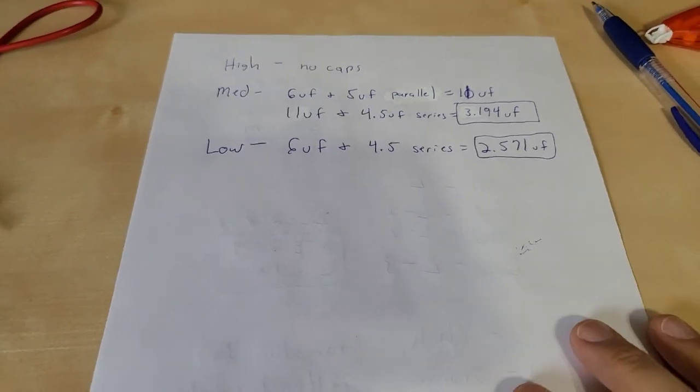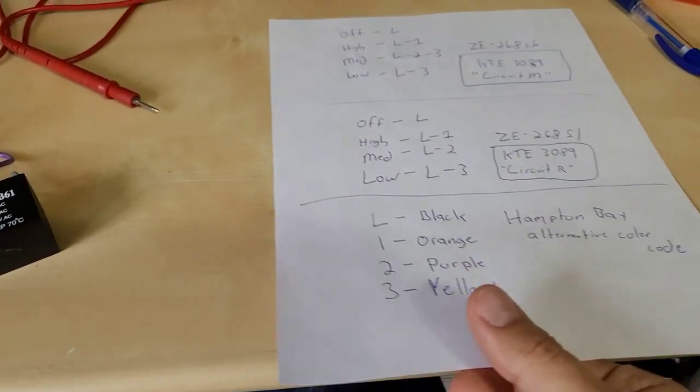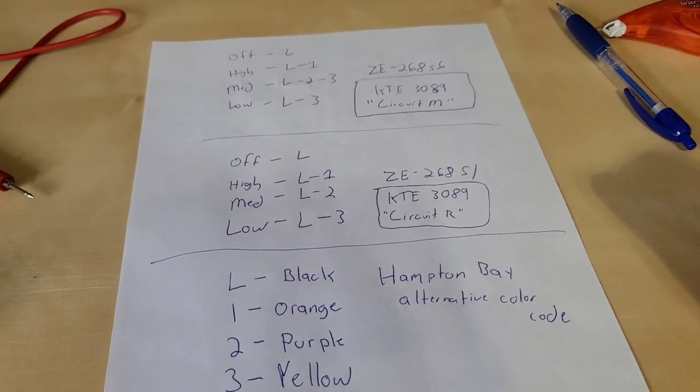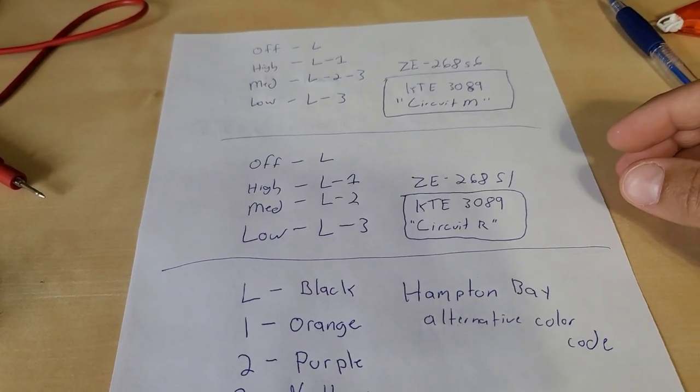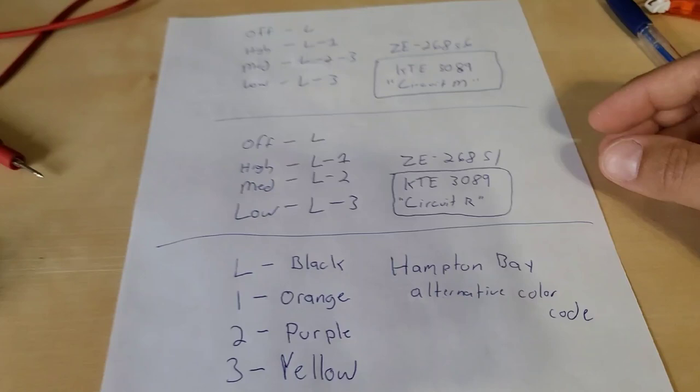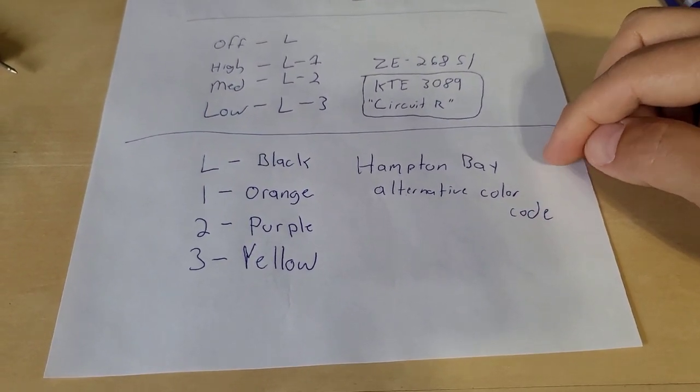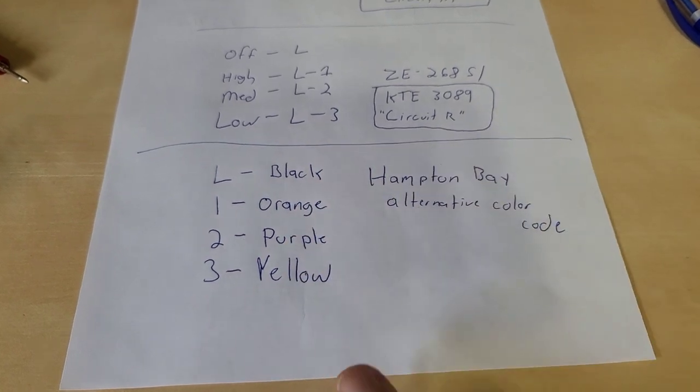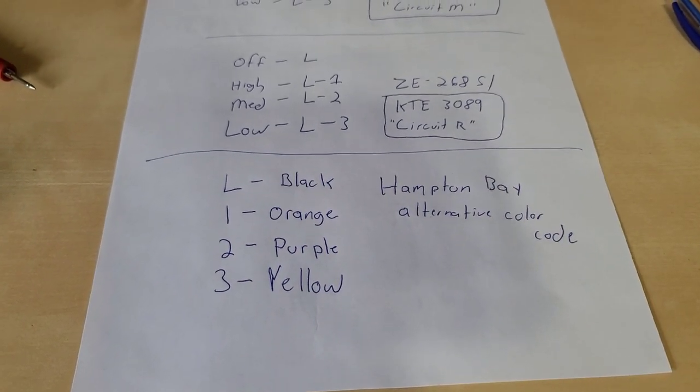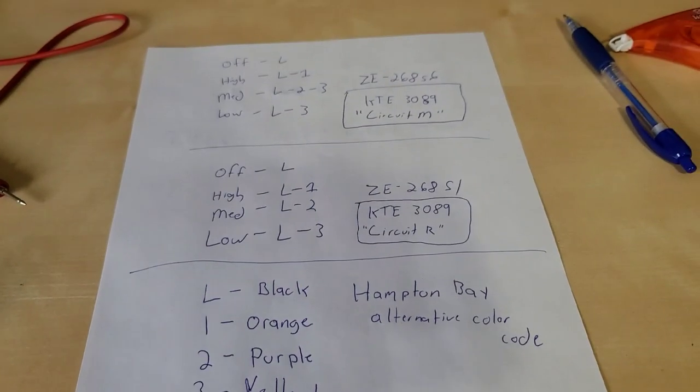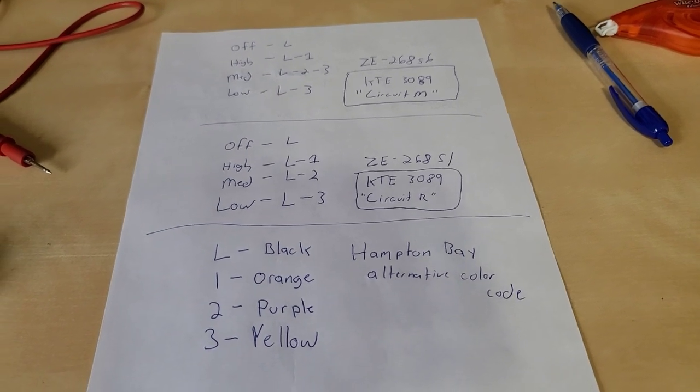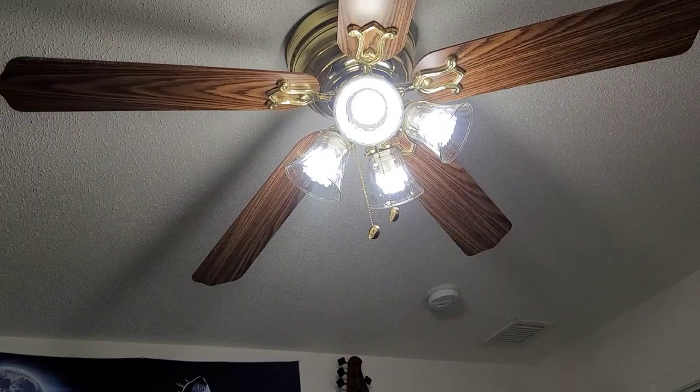But yeah that's basically how that works. There are different circuits in there and this is what I've learned after doing a lot of research myself. But I hope that this alternative color code helps you out here too because sometimes black orange purple yellow, those are not the colors used, but hopefully this gives you guys an idea of how this works and as you can see it works great.